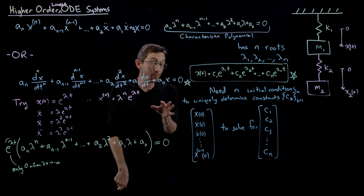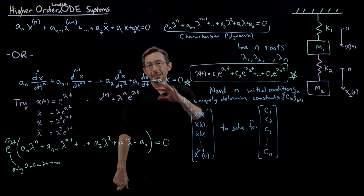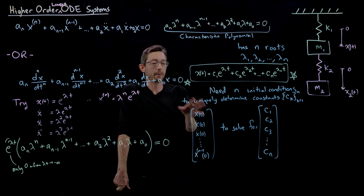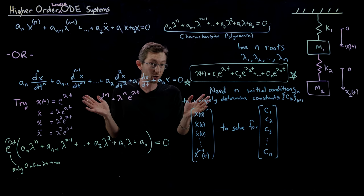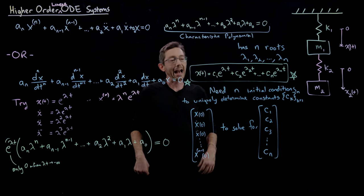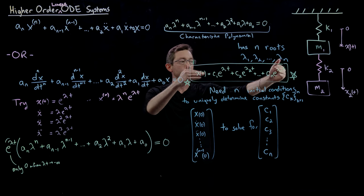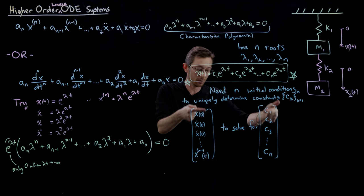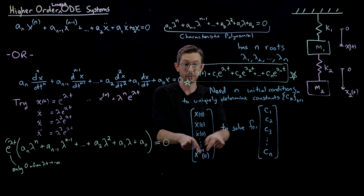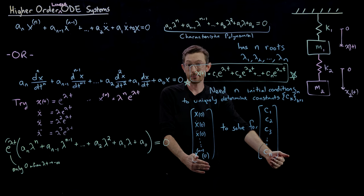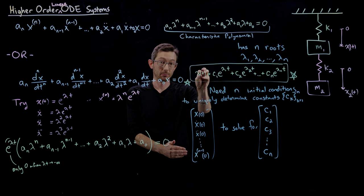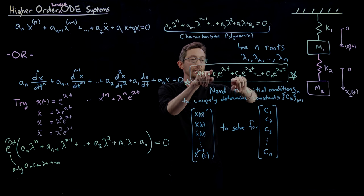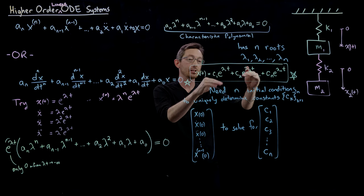Now some of you might remember — and this would be a cool exercise to do, it would take 20 minutes — you could take this generic solution and then write down x-dot, x double-dot, x triple-dot, all the way to the (n−1)th derivative. That's n equations — plug in zero to all of them. All of the exponentials are going to go away.